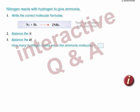How many hydrogen atoms are in the two ammonia molecules? So how many hydrogen molecules do we need?